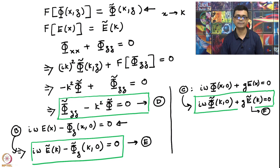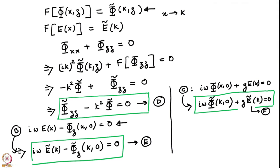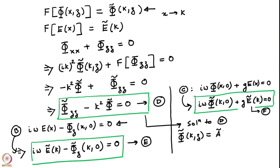We have seen such kinds of things when we did the method of multiple scales. The general solution to D is Φ̃(k,z) as a linear combination of e^(kz) and e^(-kz), where the prefactors are functions of k. I will write this as Ã(k)·e^(|k|z) + B̃(k)·e^(-|k|z). I am putting |k| — I will explain shortly why.